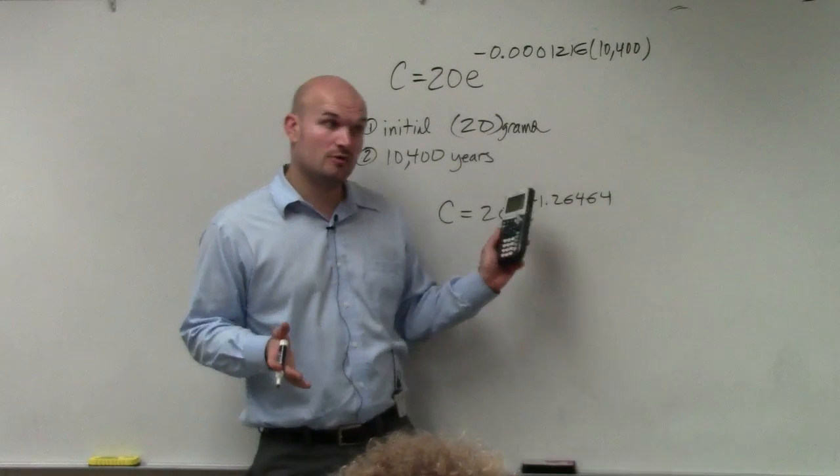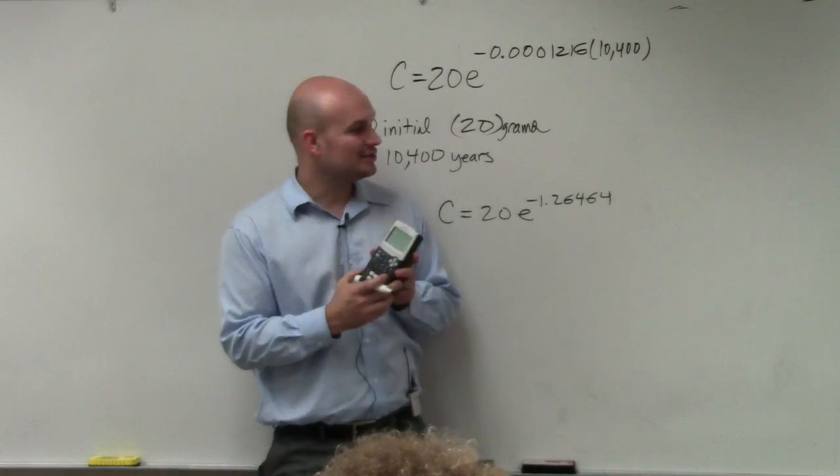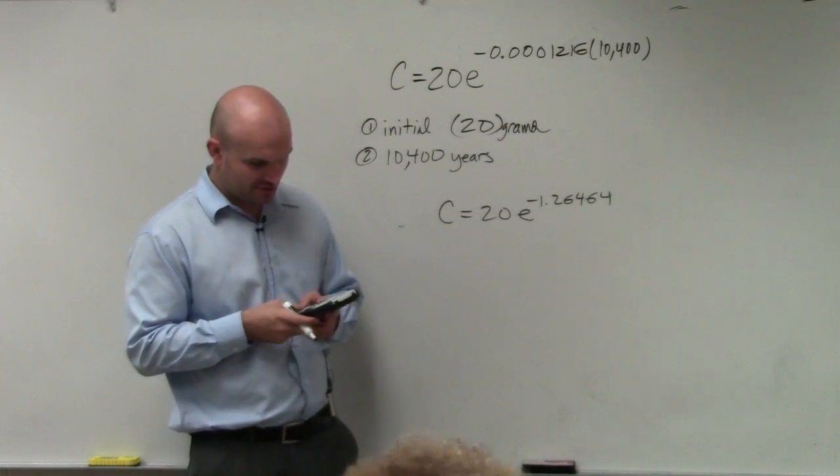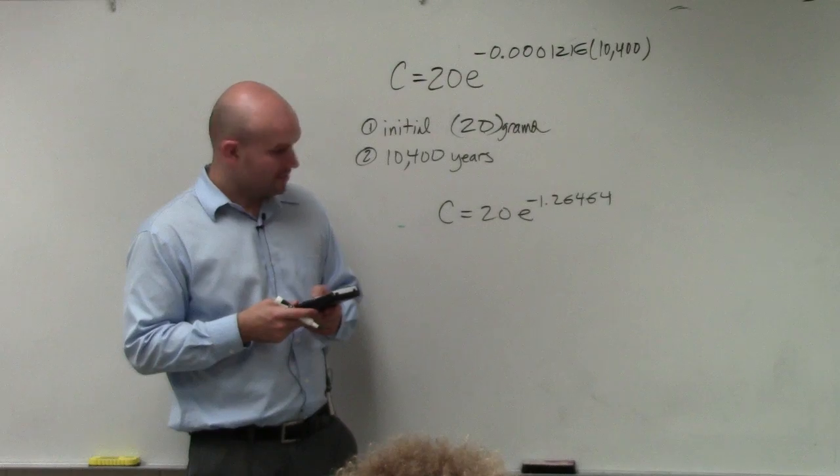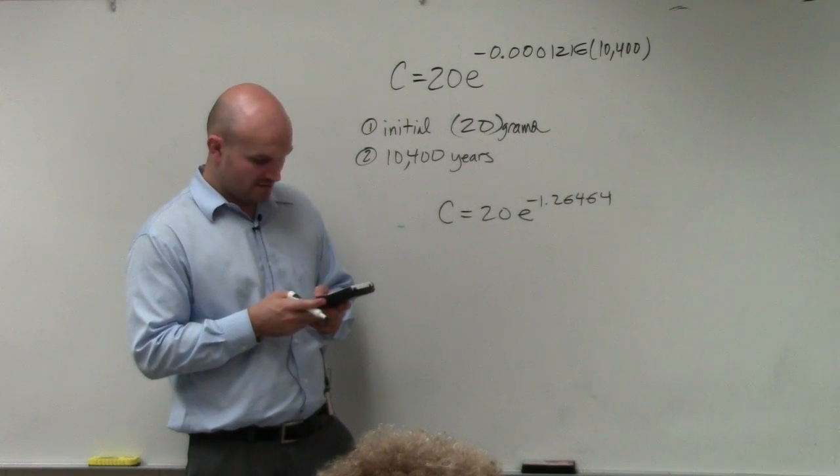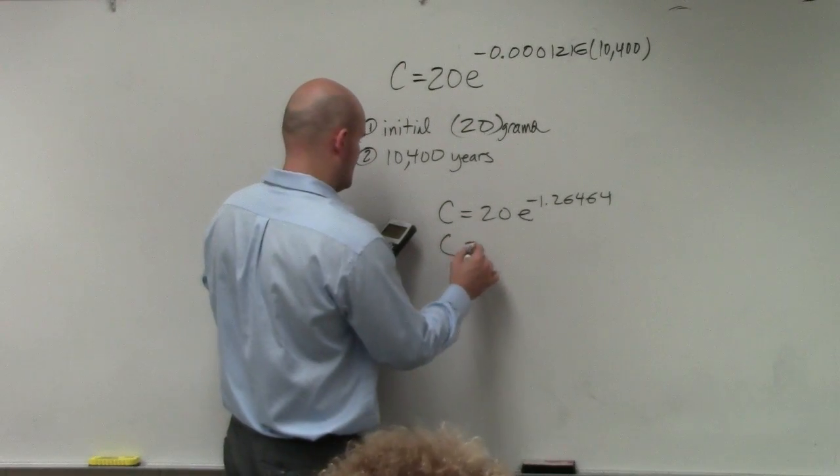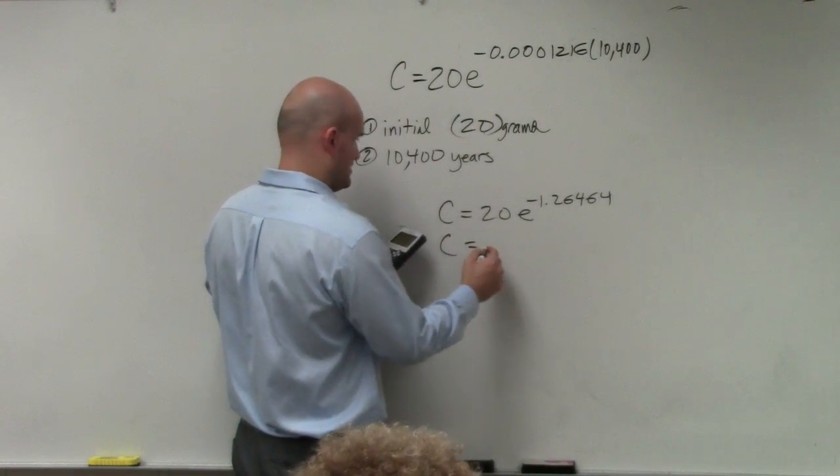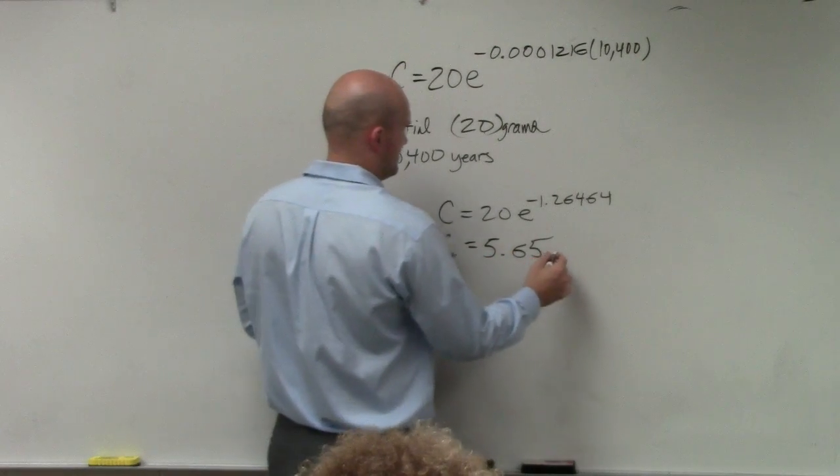If you want to make sure that you're not rounding, always try to use the exact value. If you want to use the answer function in your calculator, that's really preferred. So I can just do 20 times E raised to the negative 1.26464. And the amount of carbon that I get, I can round at this end. I'll round to the nearest hundredth: 5.65 grams.